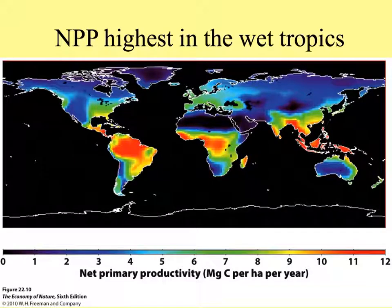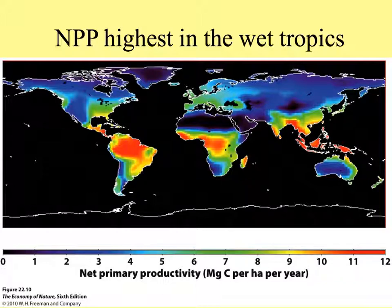Here's a picture of the world showing net primary productivity on a color scale, with reds being the greatest and blues indicating lower productivity. Net primary productivity is highest in the tropics and in the parts of the tropics that are the wettest.